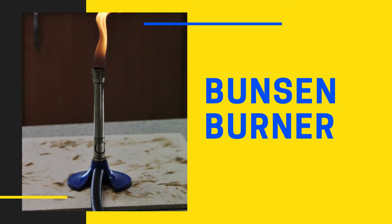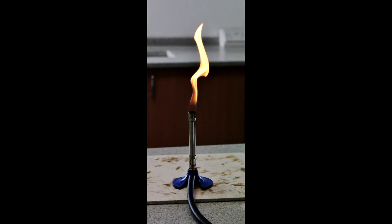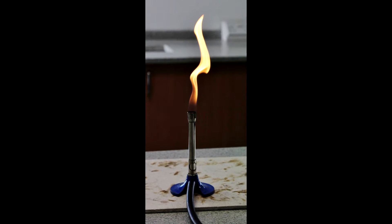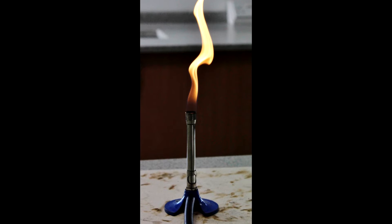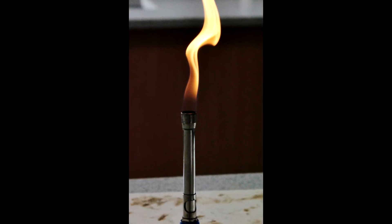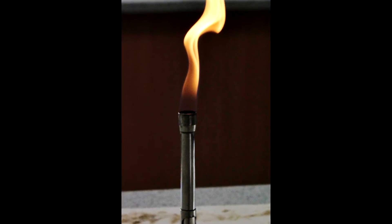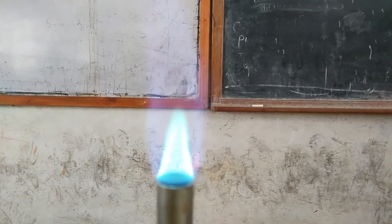Number 5. Bunsen Burner. A Bunsen burner is an apparatus used to heat chemicals. When using it, ensure the air hole is closed before turning it on. Once turned on, a yellow flame is produced. Then open the air hole to produce the blue flame. The blue flame is used to heat chemicals because it is hotter and more stable.